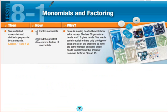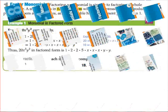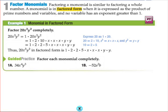Let's take a look at 8-1: monomials and factoring. The first thing we have to understand is that factoring a monomial is similar to factoring a whole number. A monomial is in factored form when it's expressed as the product of primes and variables, and no variable has an exponent greater than 1. So it's really just breaking it down into its parts.